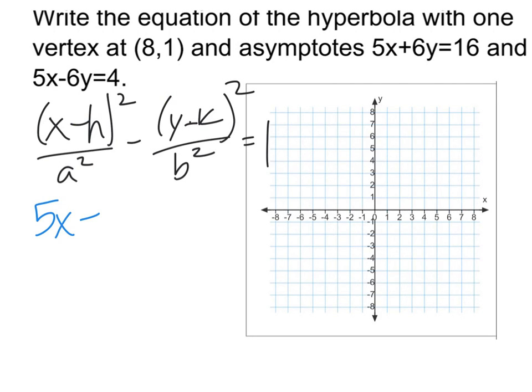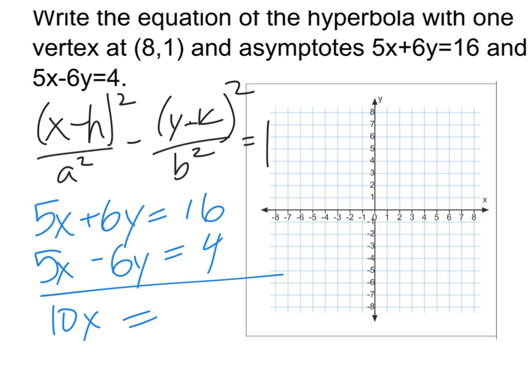So when I see this, I see that the y's cancel out very easily, and so then I get 10x equals 20. So the x coordinate is going to be 2.